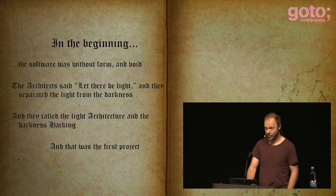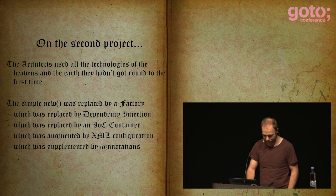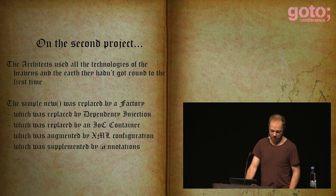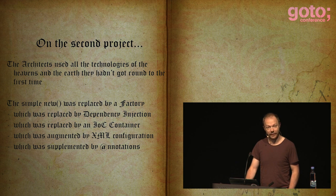On the second project, the architects used all the technologies of the heavens and earth they hadn't got round to the first time. The simple new was replaced by a factory, which was replaced by dependency injection, which was replaced by an IOC container, which was augmented by XML configuration, which was supplemented by annotations.